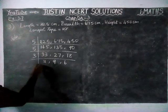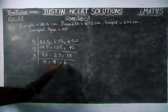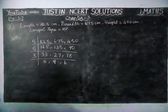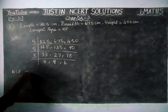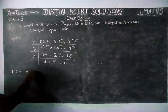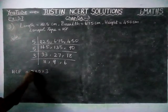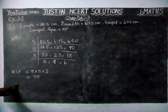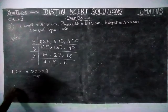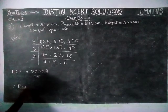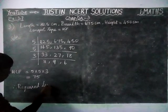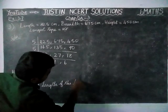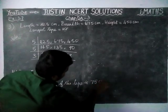Now we don't have any other common divisor, because 11, 9 and 6 don't have any common divisor for these three numbers. So we stop here. HCF is equal to the product of all the common divisors: 5 × 5 × 3 = 75. Therefore, the required length of the tape is 75 cm.